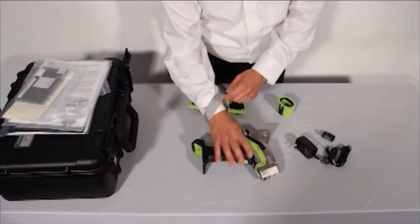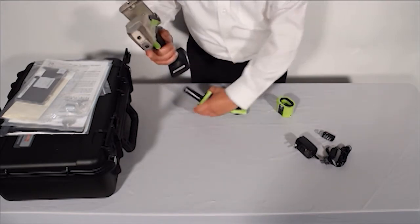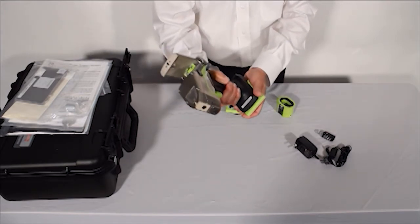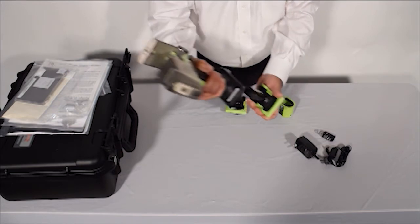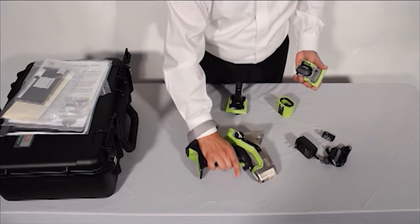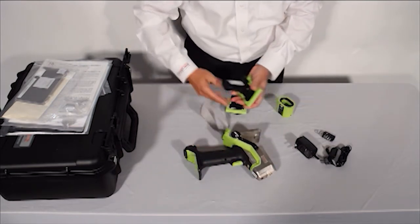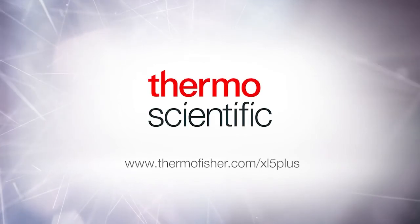To install the battery, put the lanyard on for safety. Insert the battery in the bottom of the analyzer. To remove it, squeeze the two tabs and pull it out. It's that simple. Enjoy your new Niton.